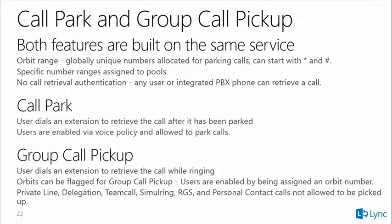Nothing has changed in call park since 2010. Group call pickup is new in 2013 — it creates a number specific to a user or group so that when a colleague's phone rings, you can type a code to retrieve their call without going to their desk. They get notified you picked it up. It's configured using CFA-Util against a separate Lync application server — no PowerShell or GUI process exists yet for group call pickup.